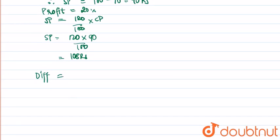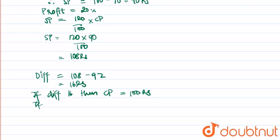Therefore, the difference in the selling price equals 108 minus 92 equal to 16 rupees. So we got to know that if the difference is 16, then the cost price of the article is 100 rupees.